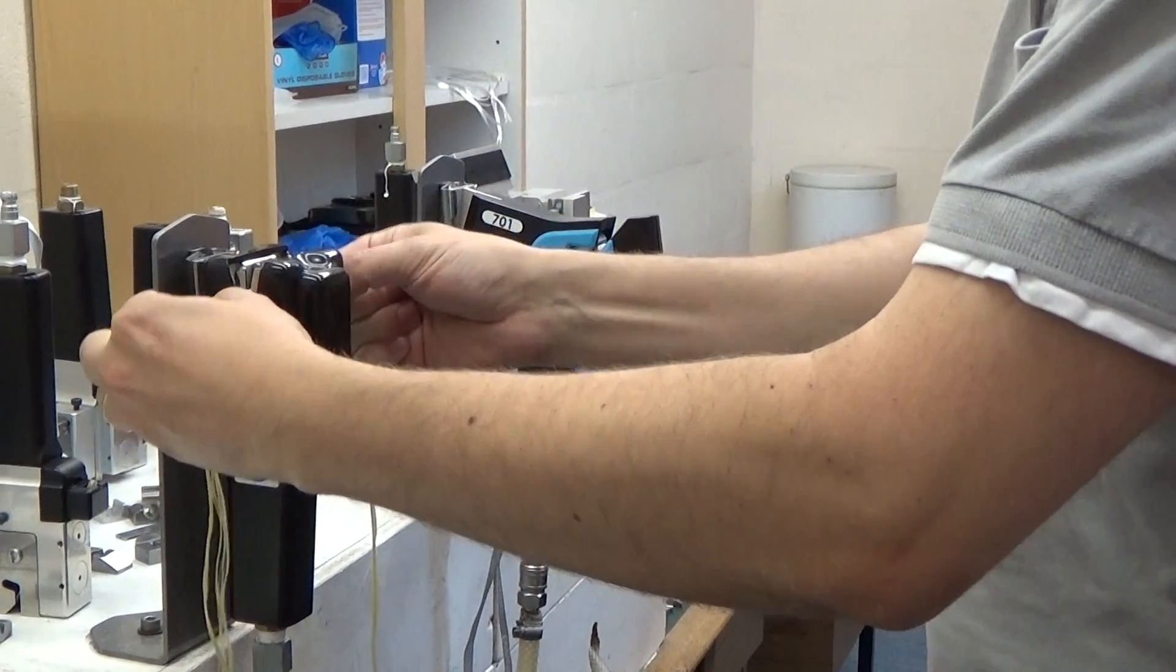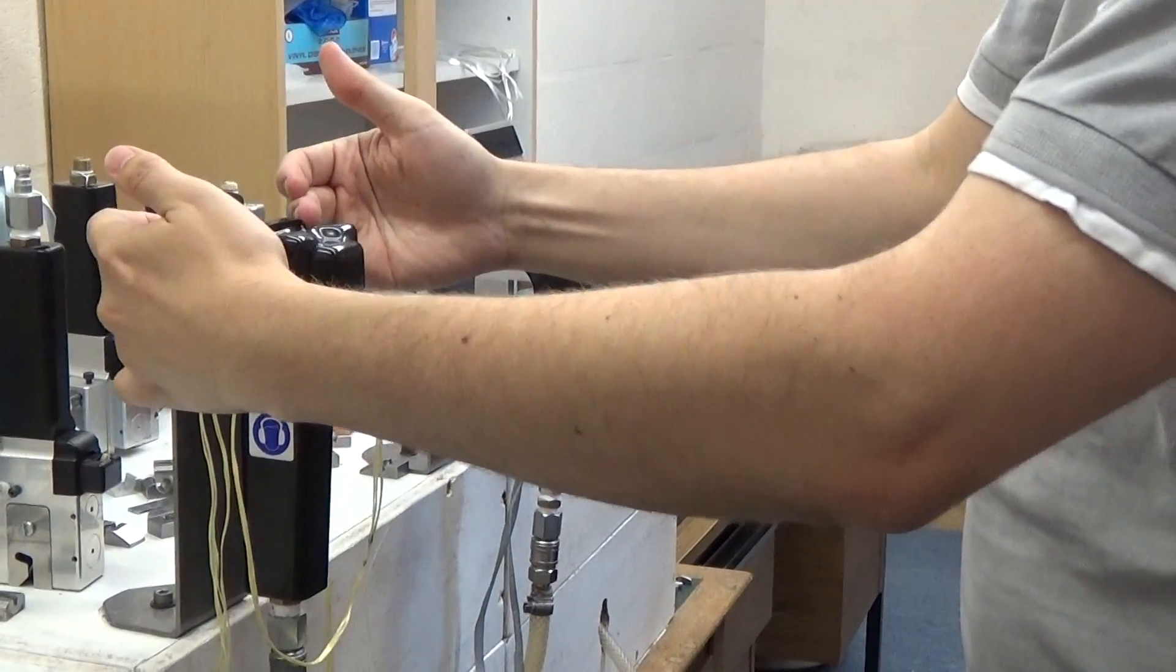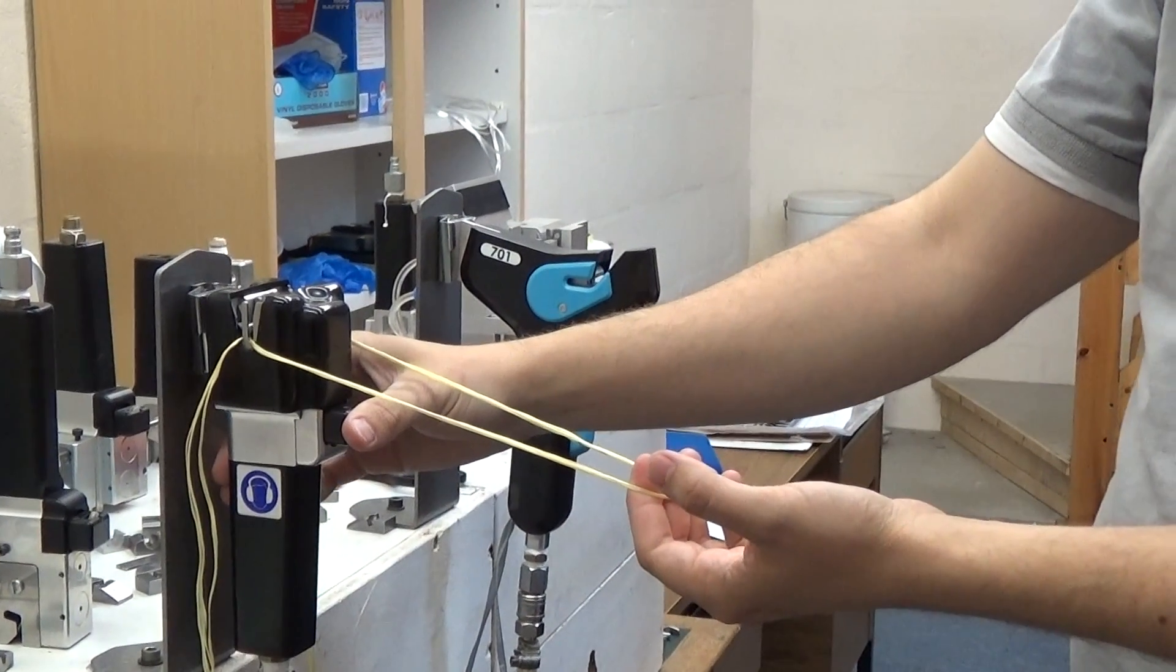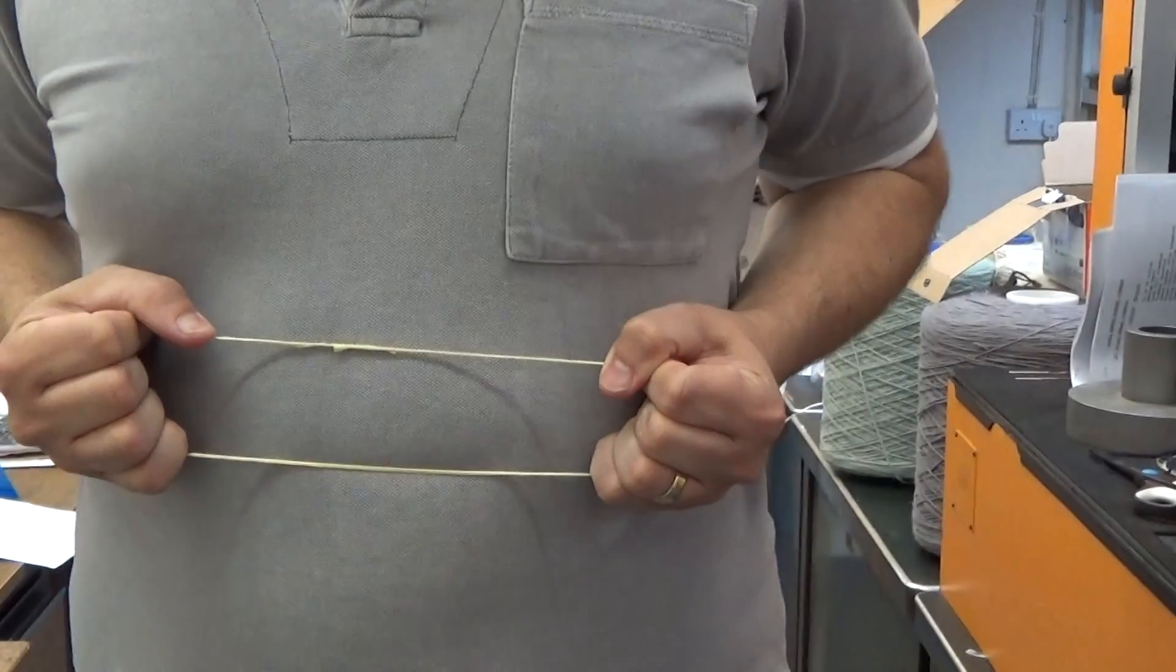So you place the yarns in crisscross fashion, like an X shape. The top sides will cut away. You give a quick half a second blast, and you're left with a neat, strong joint.